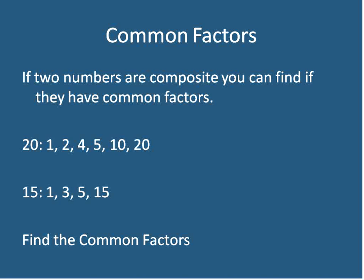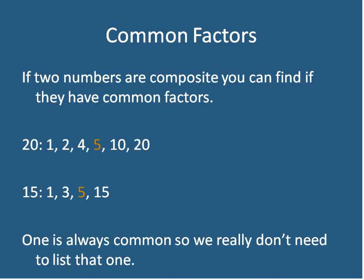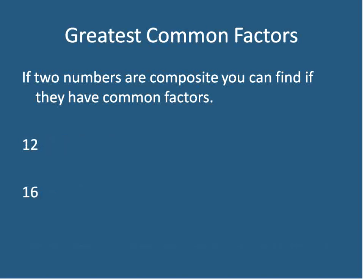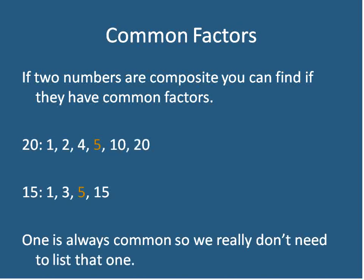Now we're going to identify any numbers between these two that are common. We have both 1 and 5 in common, but we don't count 1 — 1 is always in common with every number. So we're not going to count 1 from now on. In this case, they have the common factor of 5. The common factor between 20 and 15 is 5.